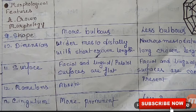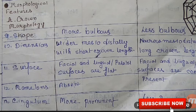Now we will discuss the morphological features differentiating deciduous and permanent teeth. Regarding shape: the deciduous teeth are more bulbous — meaning rounded like a bulb — while permanent teeth are less bulbous.